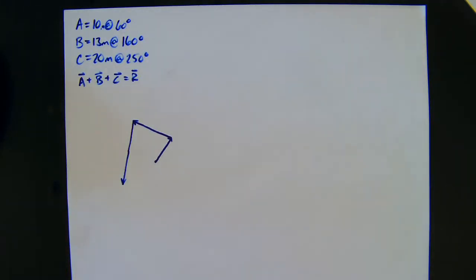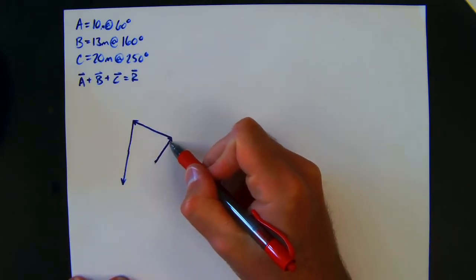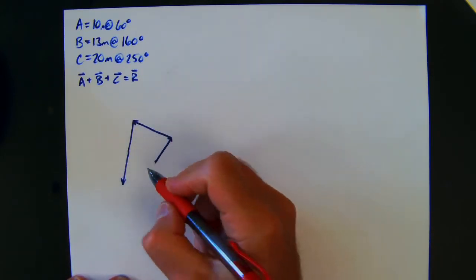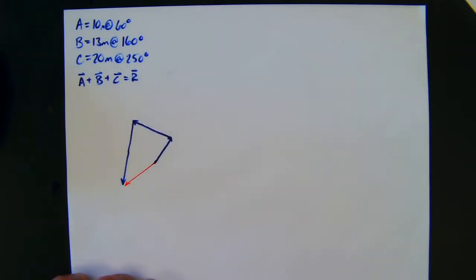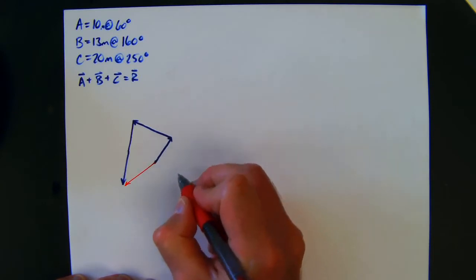Based on the fact that if I started here, I came up, I went over here, and I went down here, my resultant is going to be from the beginning to the very end. And one of the ways that we'll do that is we break each of these up into their components.